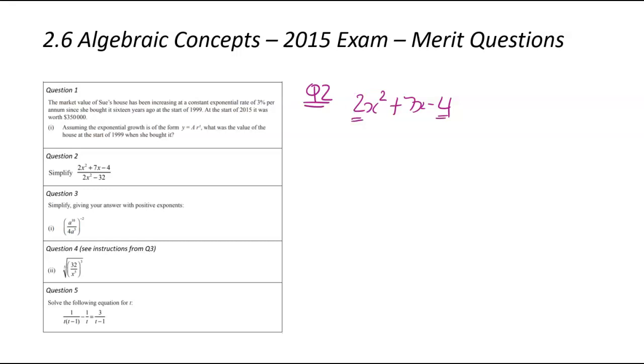When there is a number out front of the x squared, you're probably going to think about the grouping method. And to do that, you've got to multiply the first number by the last number. And in our case, that's going to get us to negative eight. You've then got to think, what numbers multiply to negative eight, but add to positive seven. And in our case, I'm thinking it's going to be eight plus minus one.